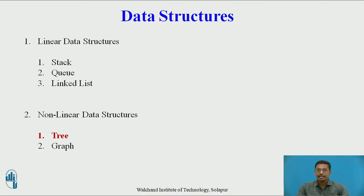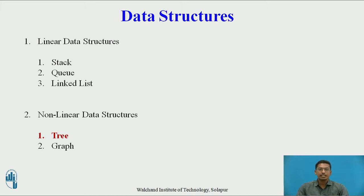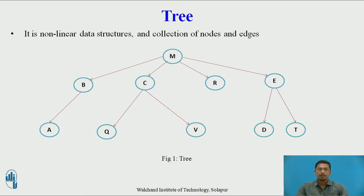Examples of linear data structure are stack, queue, and linked list. The second type is nonlinear data structure, in which each element may have more than one successor or more than one predecessor. Major examples of nonlinear data structure are tree and graph. In today's session we will focus on trees.